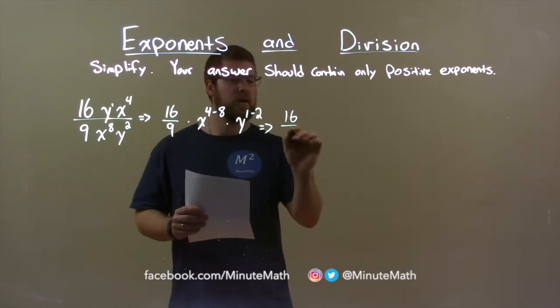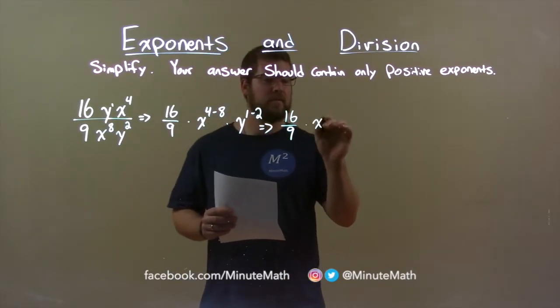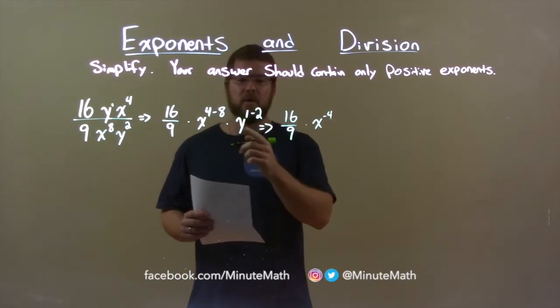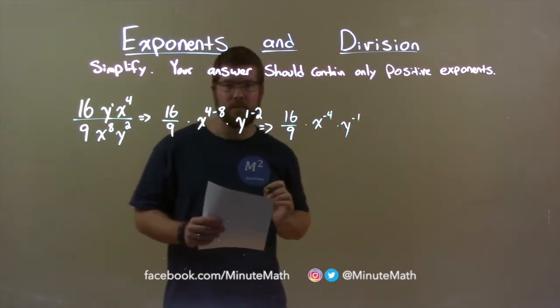Simplify. We have 16 over 9, and 4 minus 8 is negative 4. So we have times x to the negative 4 power, and y to the, well, 1 minus 2 is y to the negative 1 power.